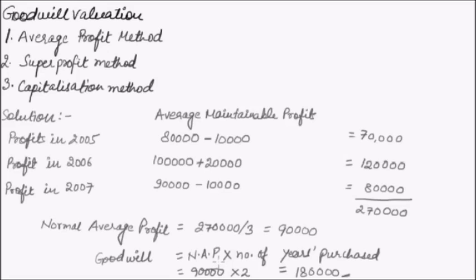We can also use weighted average profit. Weighted average profit is generally used where there is a trend in profit, such as increasing or decreasing profit. If profits are fluctuating, we use simple average profit. Next, we solve a problem using the weighted average profit method.